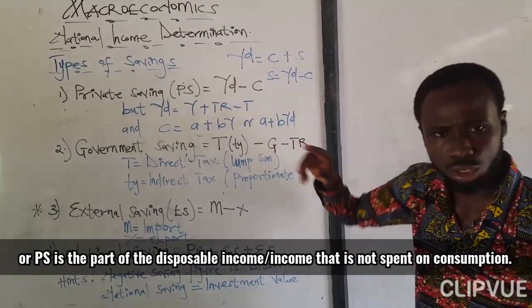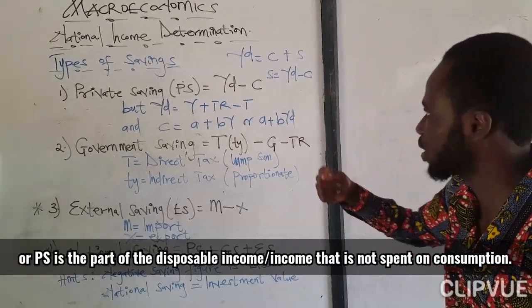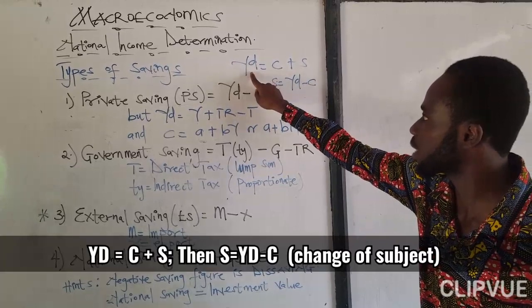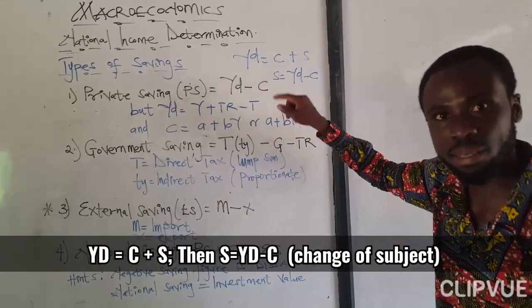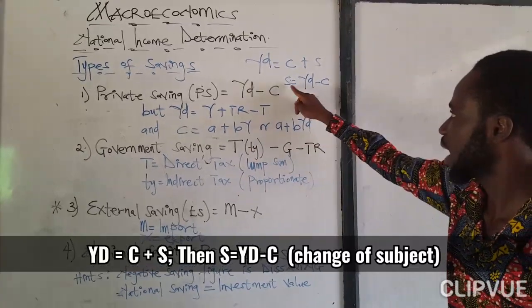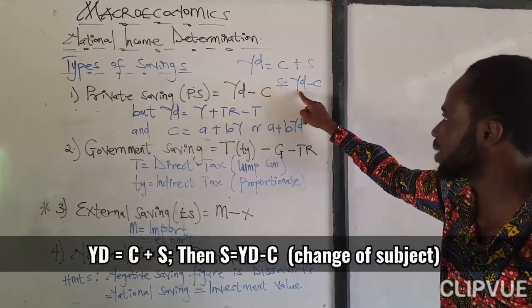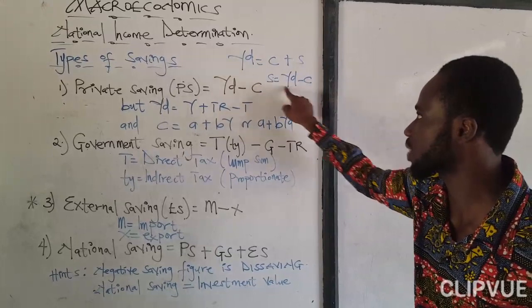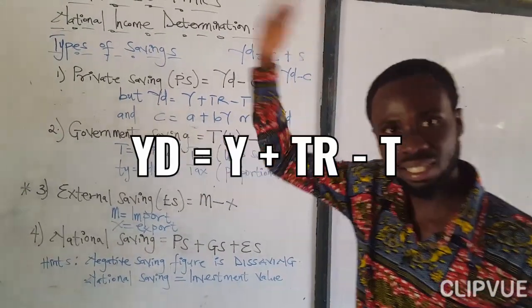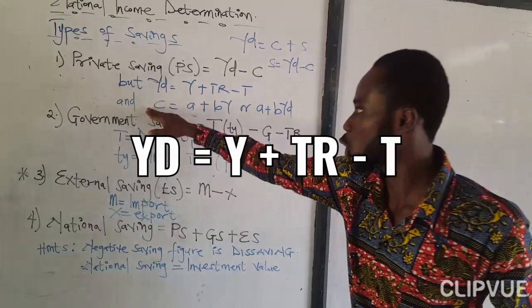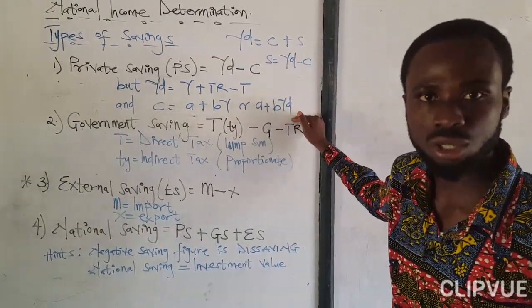But disposable income, you see, from our previous lesson, we've got to know that disposable income is either consumed or saved. So if you want savings, it's just a matter of change of subjects. S equals YD minus C, matter of change of subjects. So disposable income, we have discussed it earlier. And consumption also, we also know that one.